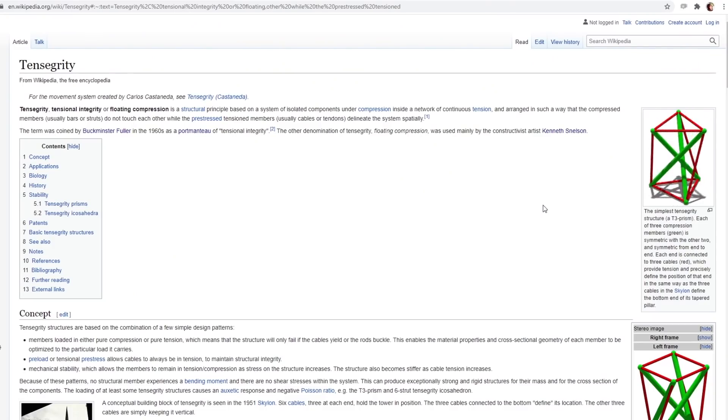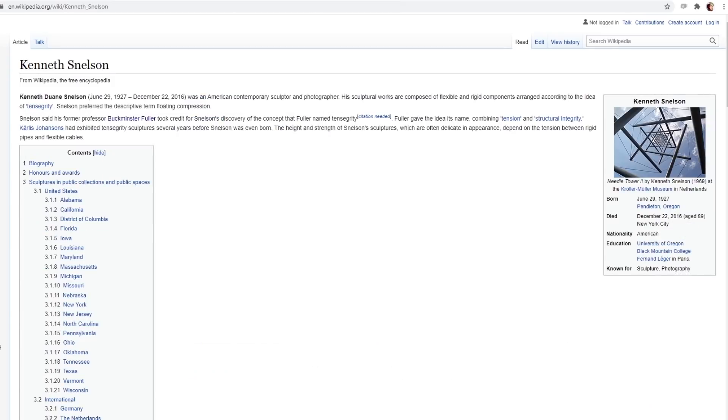This is known as tensegrity, a term originally coined by Buckminster Fuller in the 1960s which means tensional integrity. This was also called floating compression by Kenneth Snelson, who in fact claimed that Buckminster Fuller took credit for his discovery.